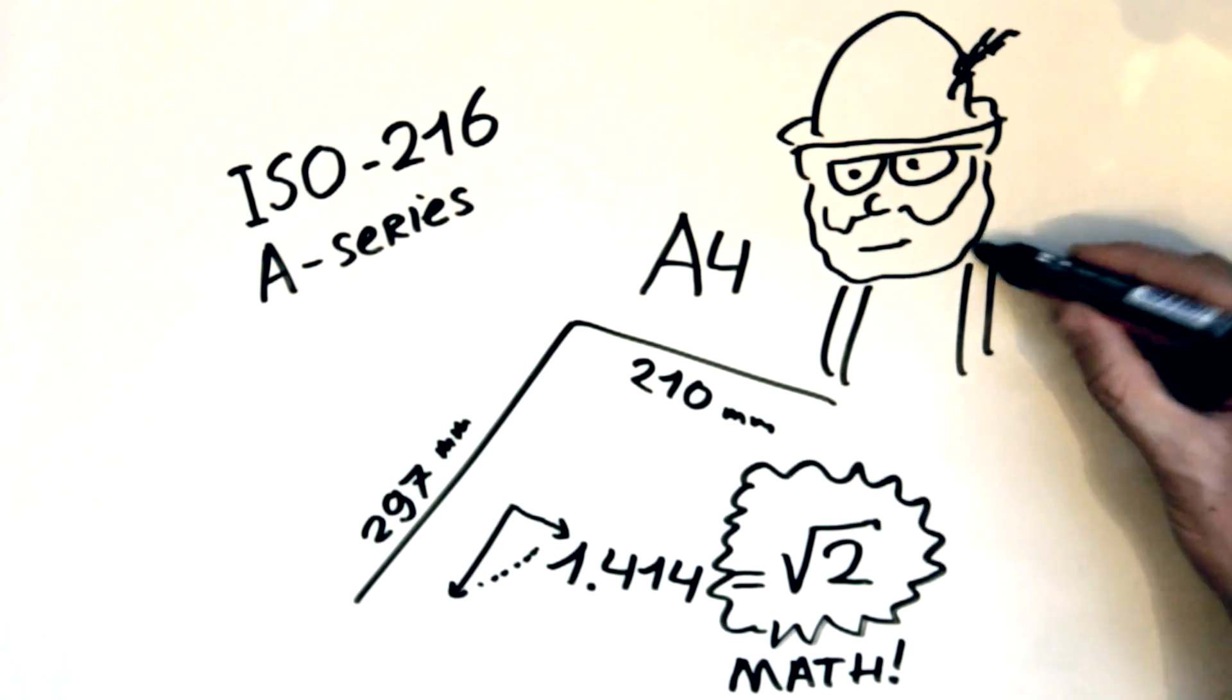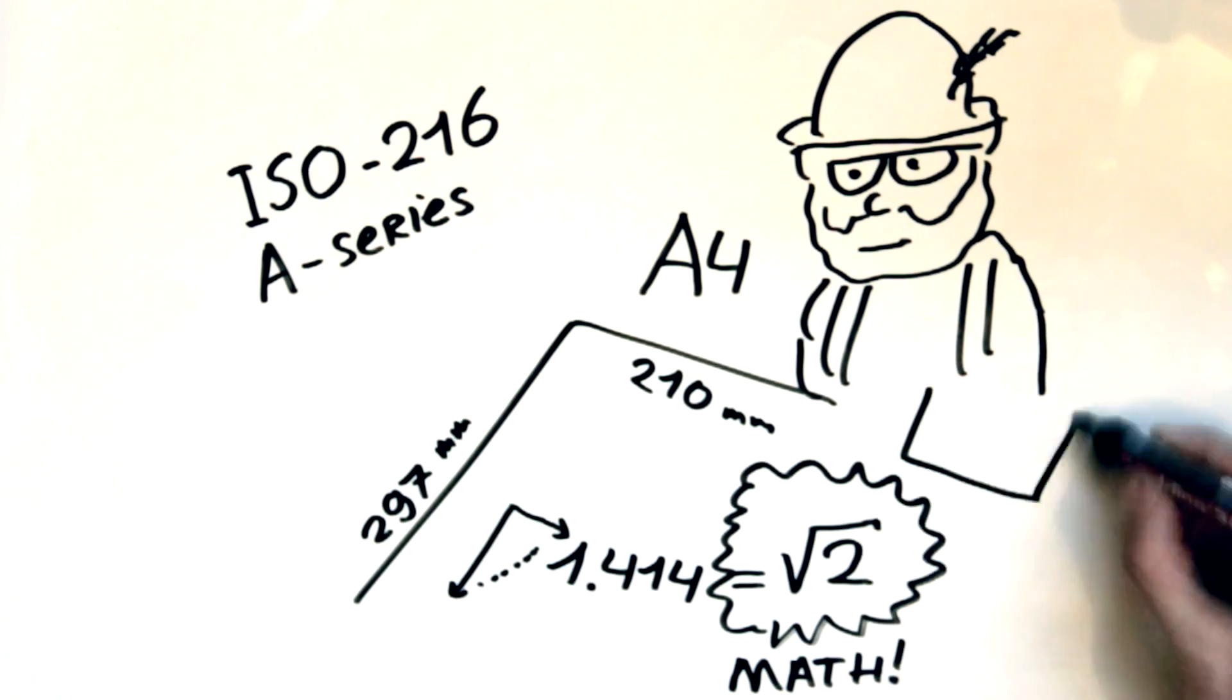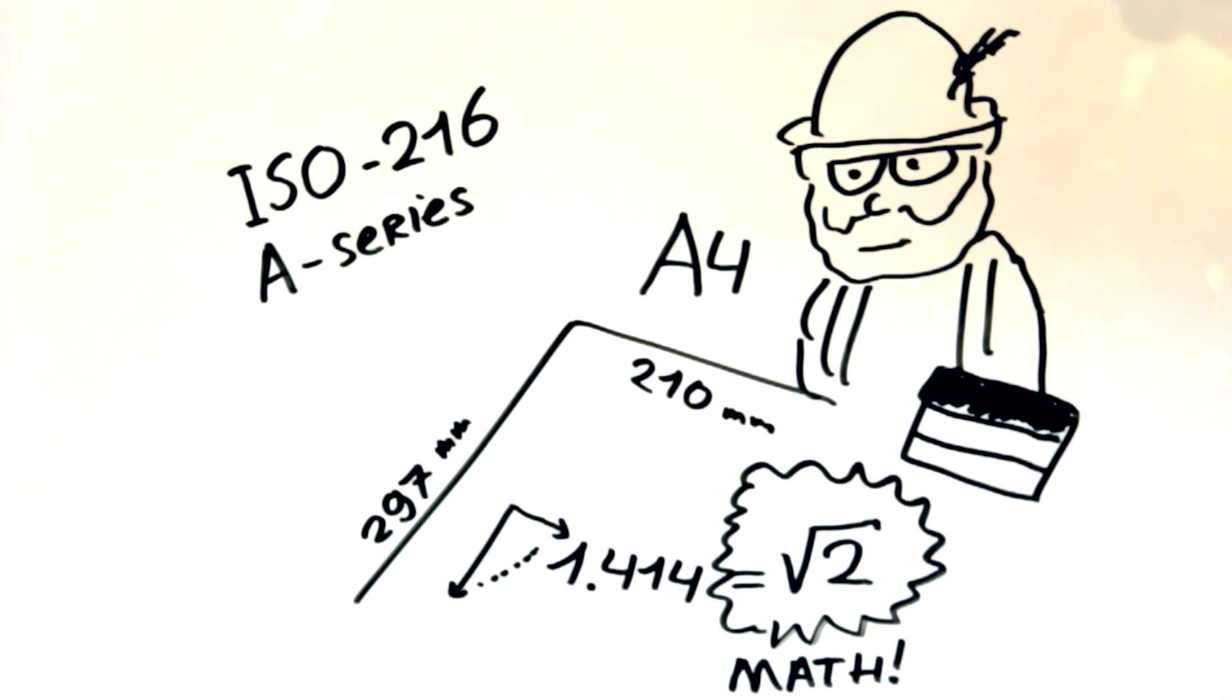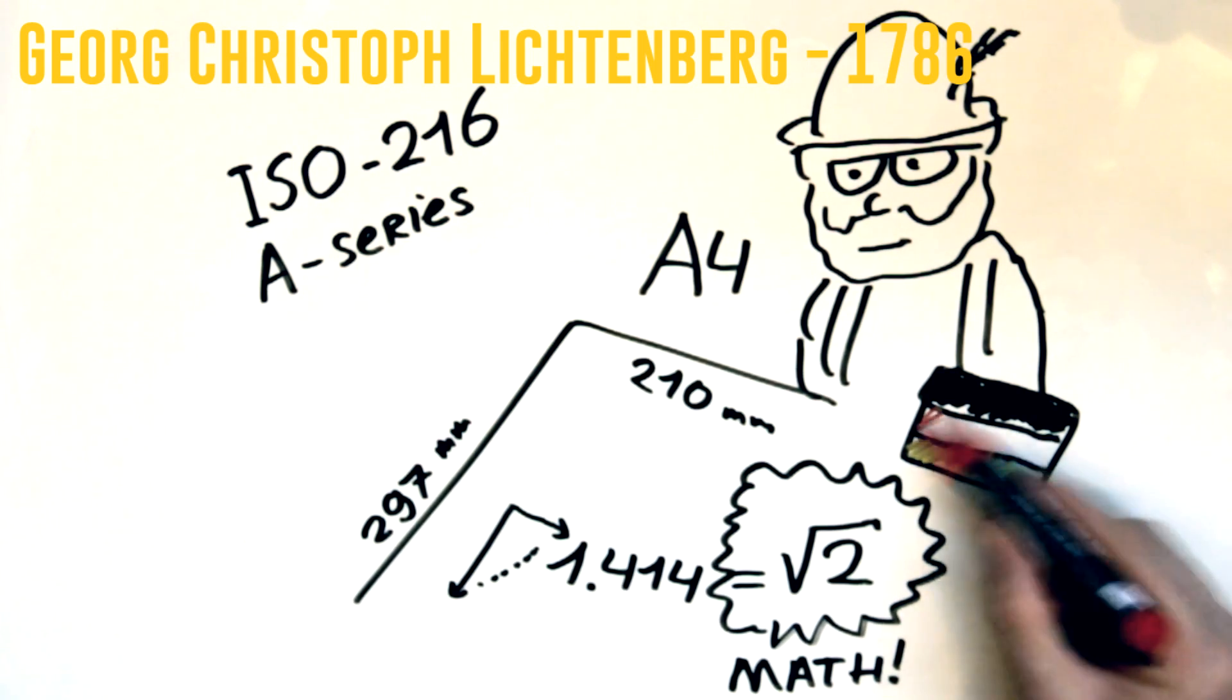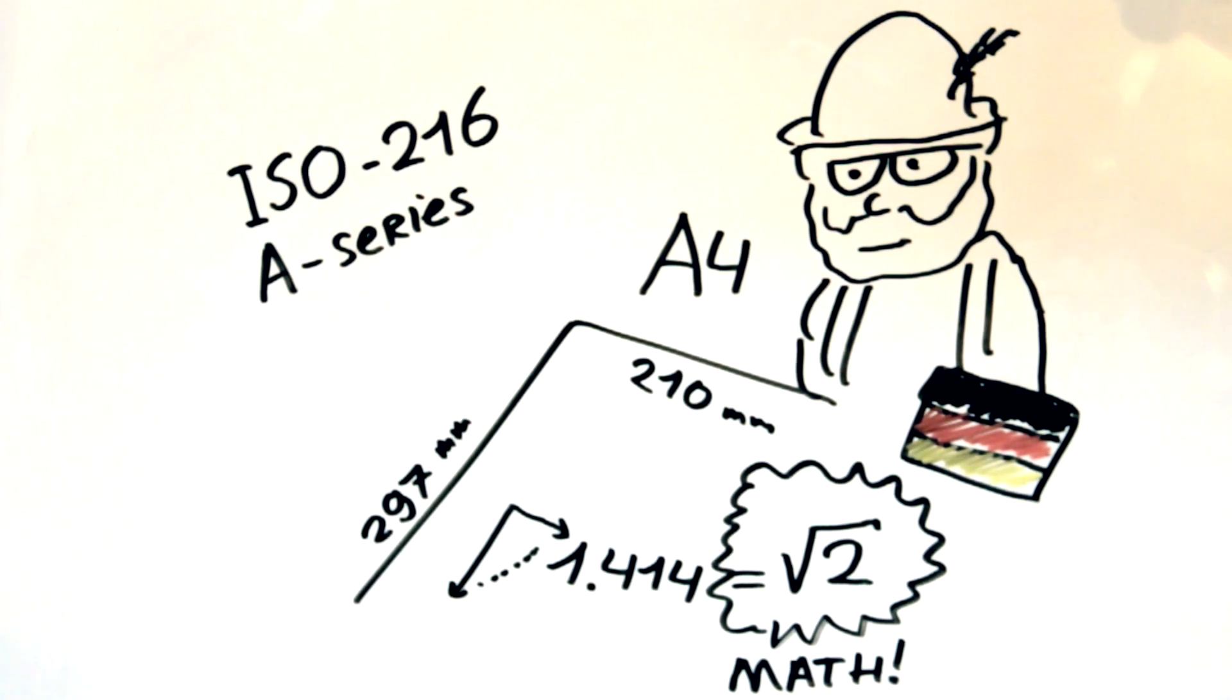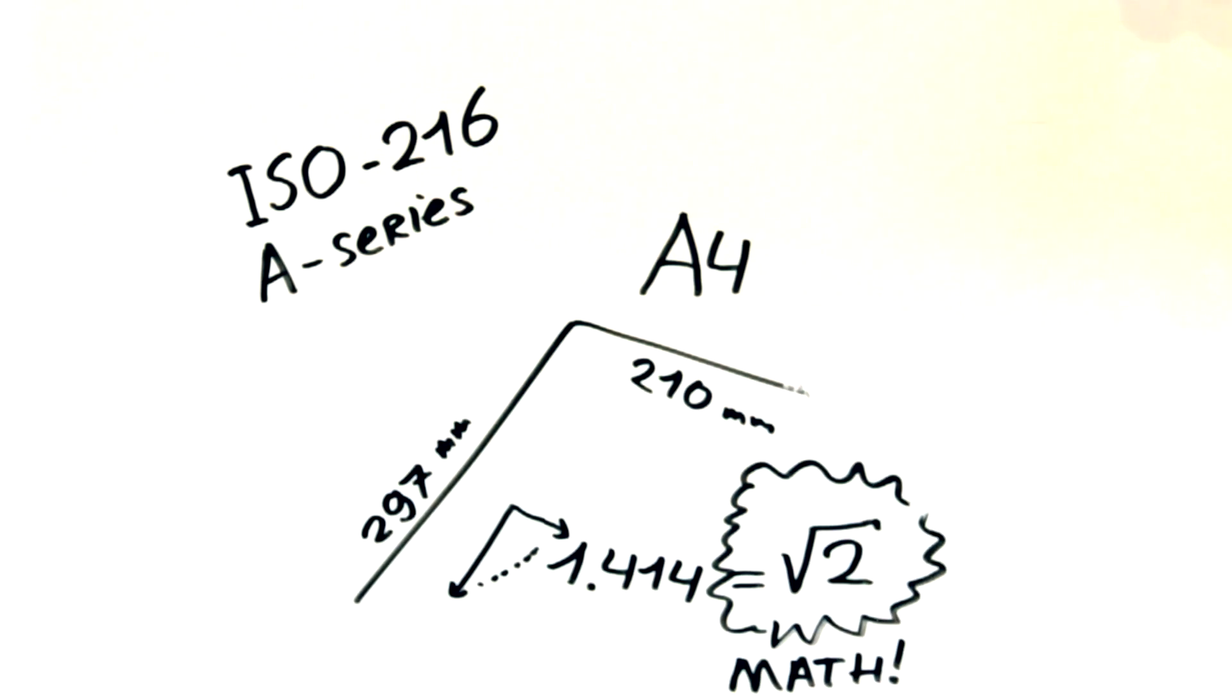This square root of 2 isn't a coincidence of course. It was first noted by the German scientist Georg Christoph Lichtenberg in 1786. But the magic ratio was probably known a lot longer.